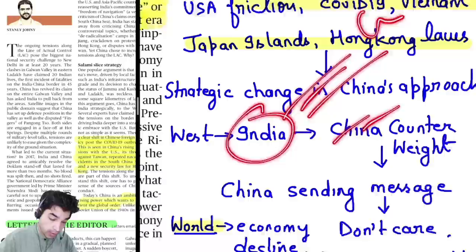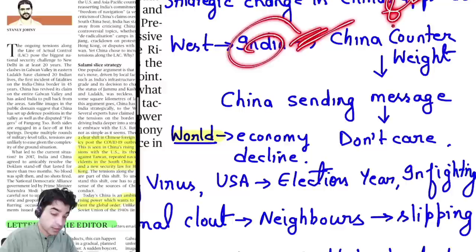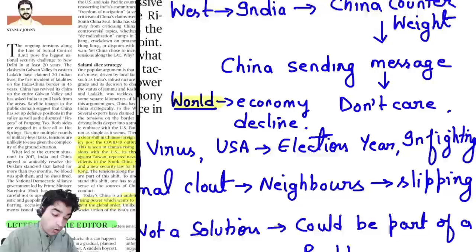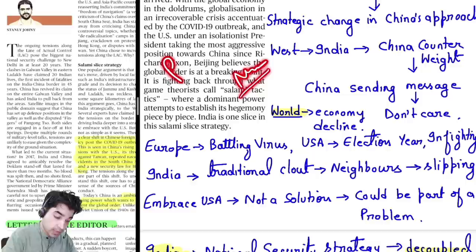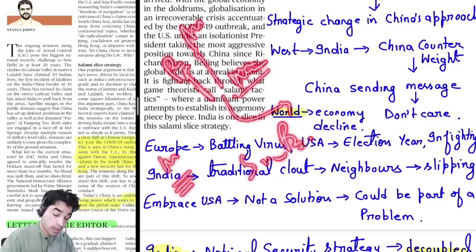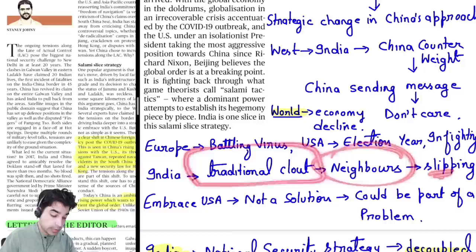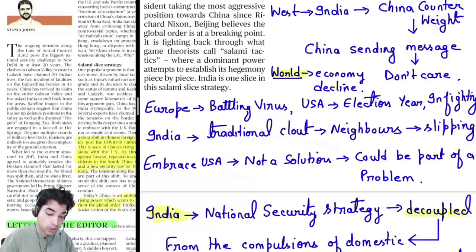The West was thinking of using India as a counterweight to check China, but China is sending the message that China is not afraid of India — telling the world that China is greater than India. Meanwhile, the world economy is declining, Europe is battling the virus, the US has elections, and India's traditional goodwill with neighbors is slipping. Relations with Nepal and Pakistan are at all-time lows, there is friction with Nepal, challenges with Afghanistan, Bangladesh, and Sri Lanka. Maldives relations have improved slightly, but Myanmar presents certain challenges.